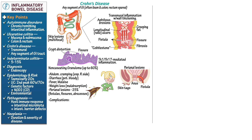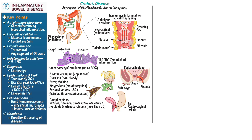Complications of Crohn's disease include problems related to fistulas, fissures, and obstructive strictures, dysplasia and adenocarcinoma, and anemia from chronic blood loss. Patients are advised to avoid cigarette smoking and nicotine, as nicotine exacerbates inflammation in Crohn's disease. Patients are often prescribed anti-inflammatories and/or immune suppressors. In some cases, surgery is necessary to remove parts of the colon.